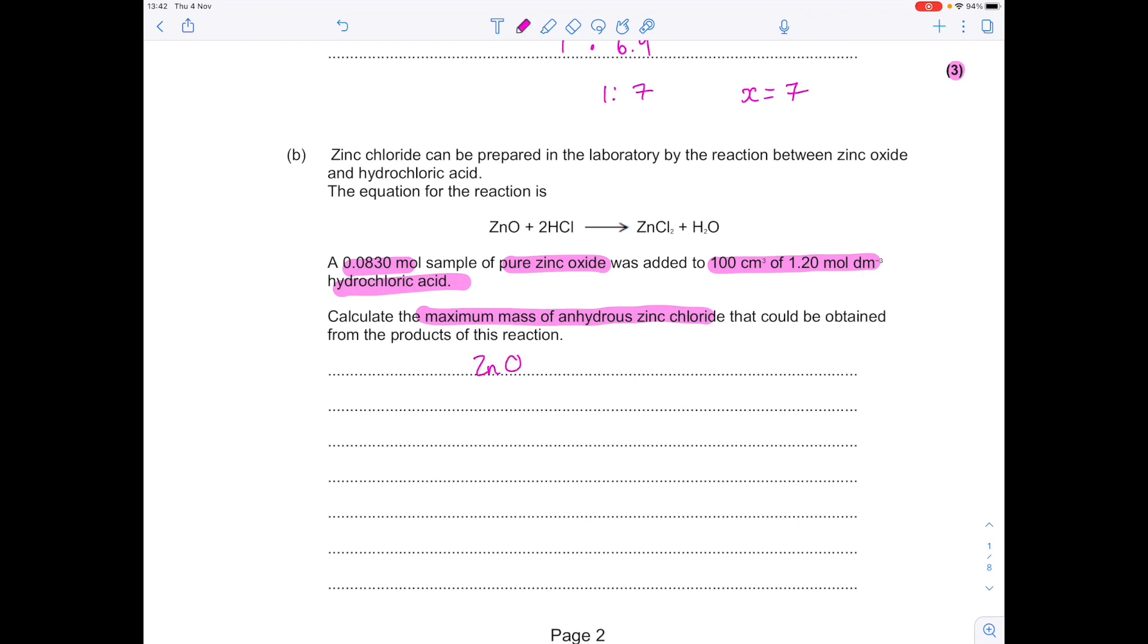So nice opportunity to use the table format again. I'm just going to rewrite that balance symbol equation here. This time our table looks like this. And we're going to use number of moles, concentration, and volume this time. So remember that number of moles is concentration times volume. We know that we've got the number of moles of zinc oxide is 0.083. And we know we had a volume of 100 centimeters cubed of hydrochloric acid.